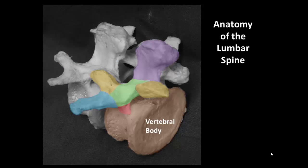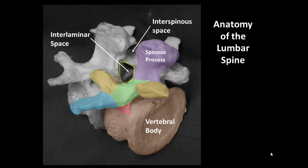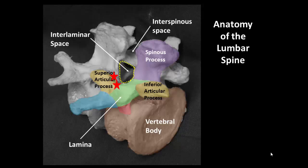A clear understanding of the anatomy of the lumbar vertebrae is important for the interpretation of ultrasound images. The vertebral canal can only be accessed through the interlaminar space. A needle or ultrasound beam must pass through the interspinous space in the midline to reach the interlaminar space. The interlaminar space is bounded by the laminae and the articular processes on either side. Contact with the articular processes and facet joint often produces ipsilateral non-radiating back pain and indicates that you are off the midline.